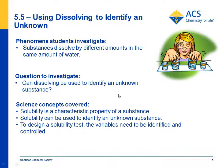Could you use dissolving to identify an unknown substance? The science concepts covered are that solubility is a characteristic property of a substance, that solubility can be used to identify an unknown substance, and to design a solubility test, you need to identify and control variables.